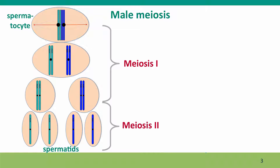Here's male meiosis, which is basically the meiosis we've already learned about. The germline cell that undergoes meiosis is called a spermatocyte — a cell that makes sperm. It does meiosis I and meiosis II and produces four products. These cells aren't sperm yet; they're called spermatids, and then they develop the morphological structures that turn them into actively swimming sperm. The key point is that all four products of meiosis turn into sperm.